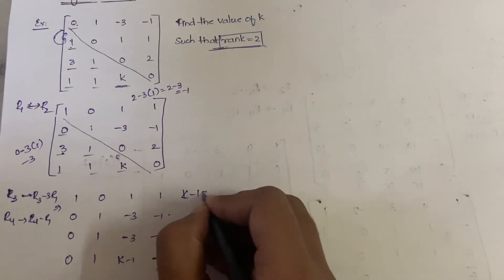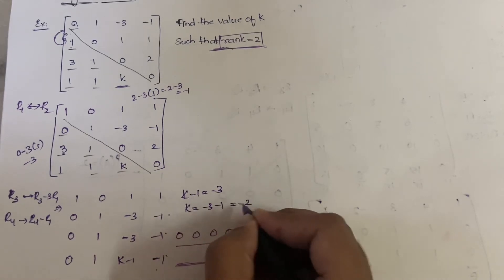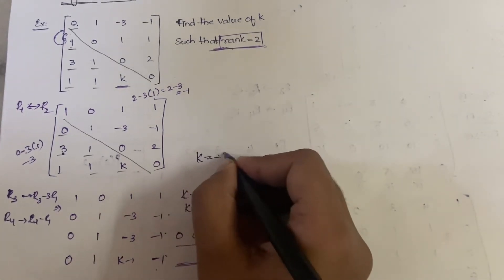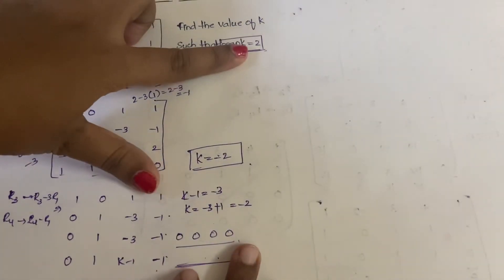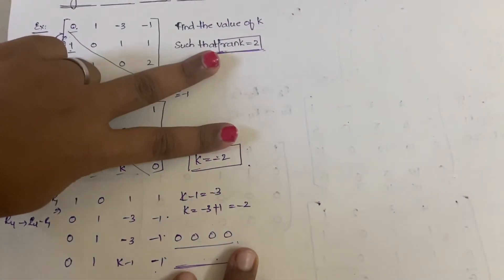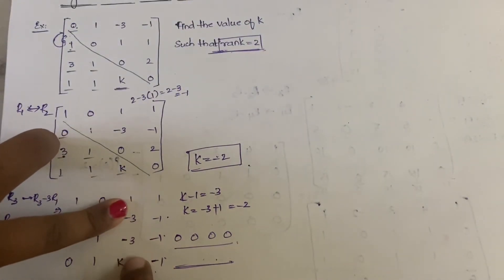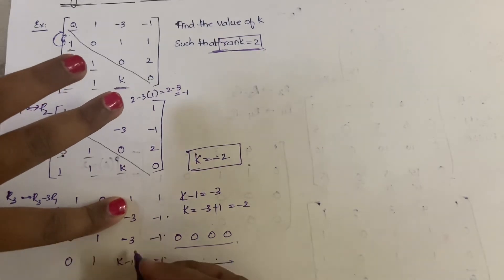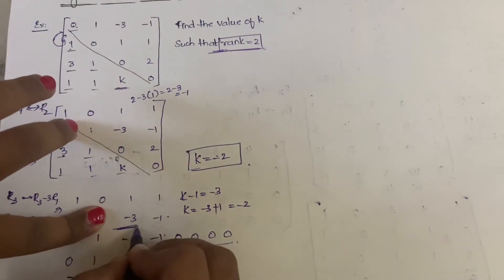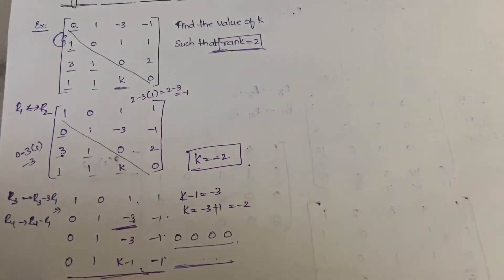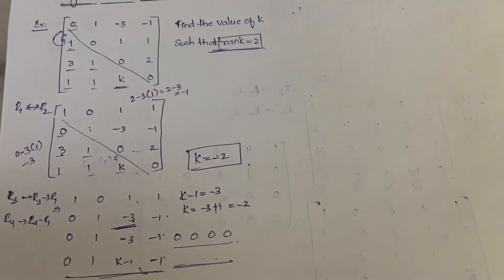So k minus 1 must equal minus 3, giving k = -3 + 1 = -2. Since the rank is 2, we have two non-zero rows and two zero rows. The non-zero rows are the first two, and the zero rows are R3 and R4. For those to become zero rows, k minus 1 must equal minus 3, so k equals minus 2.